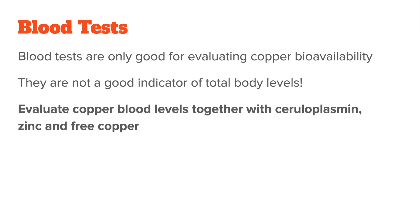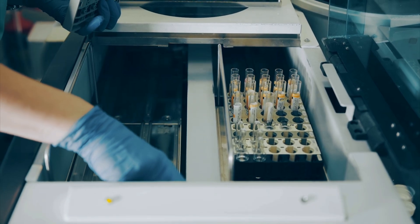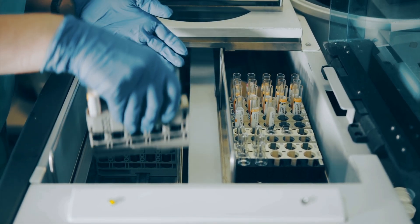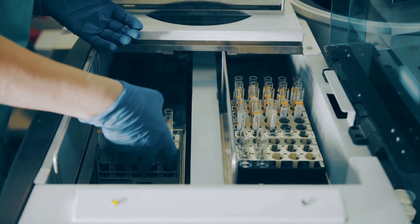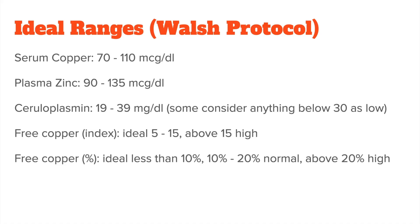You generally want to evaluate it together with ceruloplasmin, the copper transport protein. The Walsh protocol works with blood tests to check for copper toxicity, but they use tighter than normal ranges and also look at ceruloplasmin, zinc, and calculate free copper. Here are the ideal ranges: for serum copper, 70 to 110; for plasma zinc, 90 to 135; for ceruloplasmin, 19 to 39; for free copper, 5 to 15 is ideal and above 15 is considered high.